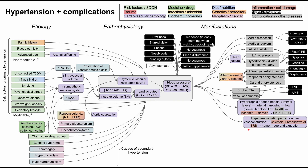One of the last organ systems affected is the eyes, causing hypertensive retinopathy. The blood vessels to the eyes undergo reactive vasoconstriction in response to the high blood flow, which can cause sclerosis and breakdown of the blood-retinal barrier, presenting with hemorrhage and exudation. Symptoms include blurred vision, decreased visual acuity, retinal hemorrhages, and papilledema on eye exam.